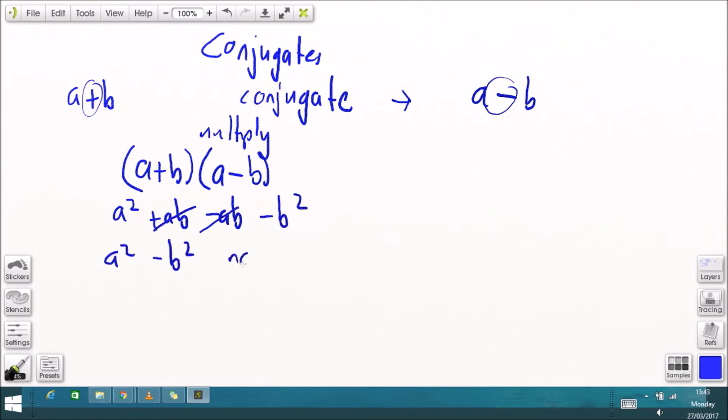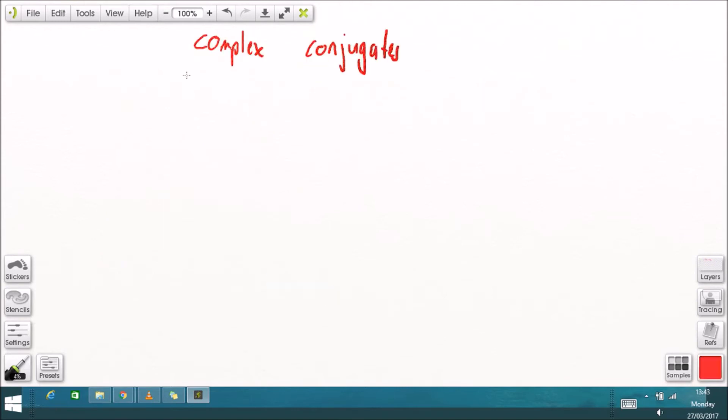so we're only left with a and b terms not an a times b term so no mixed terms. Mostly we're going to be using complex conjugates although not in this video